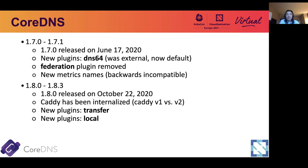As of 2020, two versions have been released by CoreDNS. 1.7.0 was released in June 2020. In this version, a new plugin, DNS64, was added to default. DNS64 used to be an external plugin, but we decided it was important enough to move into the default. We also removed the Federation plugin, which was deprecated in 2019, mostly because it's of less usage — finally in 1.7, we removed it completely. In 1.7 release, there are some backward incompatible changes, mostly related to metric names. If you're using this feature, you may want to double check and make sure that any update can be handled properly.